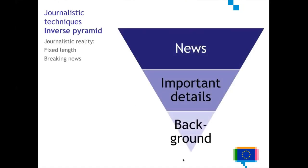Another journalistic technique — not specifically related to data visualization, but we'll come to that in a minute — is what is called the inverse pyramid. In this principle, you have to make sure that the news you want to communicate is in the top part of your article, in the first part. Then further down in the article you give important details, and in the last part you can give even more background information.